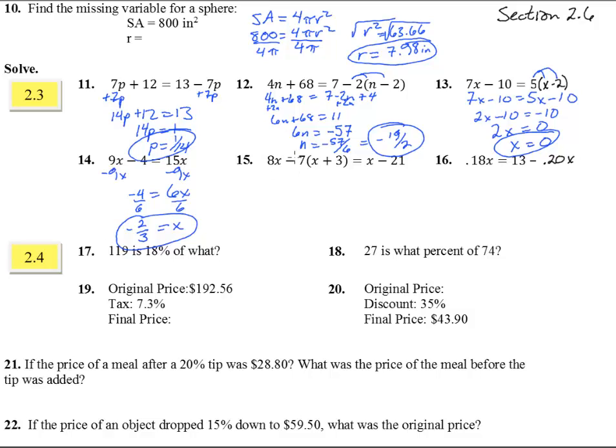Number 15. Distribute this into the parentheses. We have 8x minus 7x minus 21 equals x minus 21. Simplify this. Combine like terms. We get x minus 21 equals x minus 21.